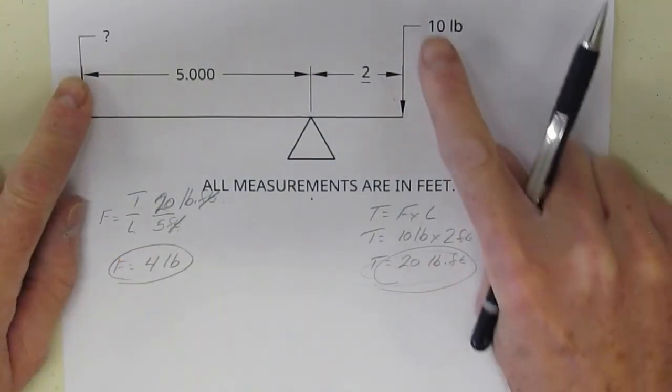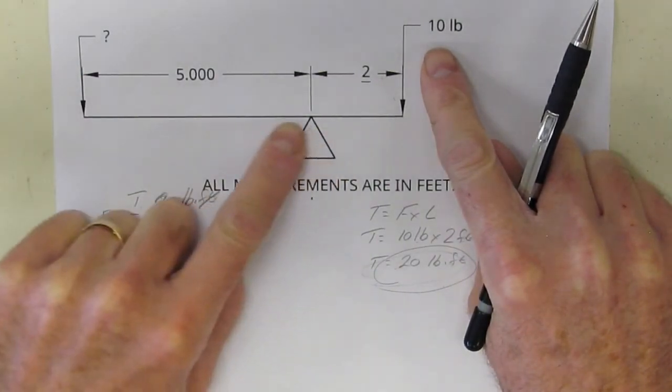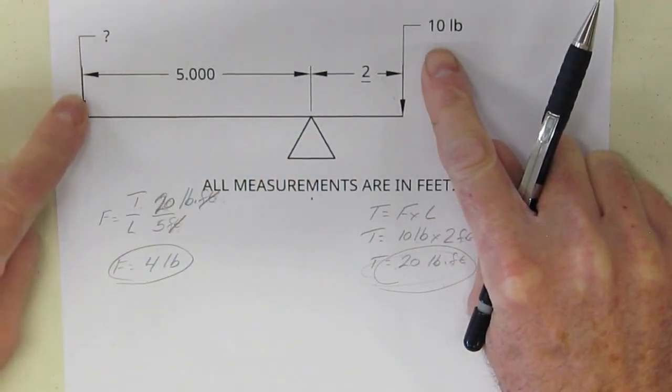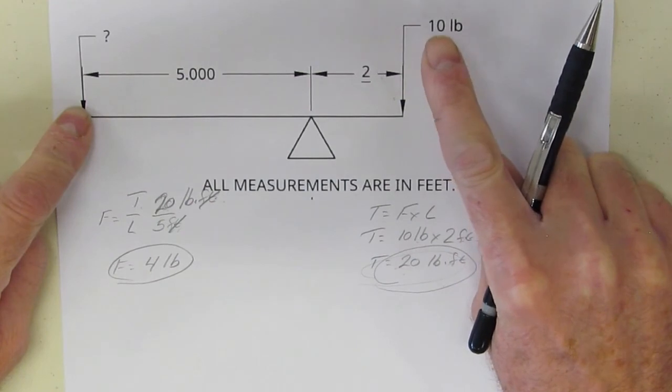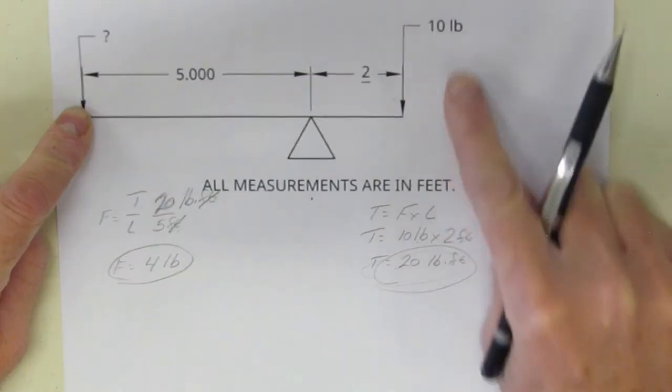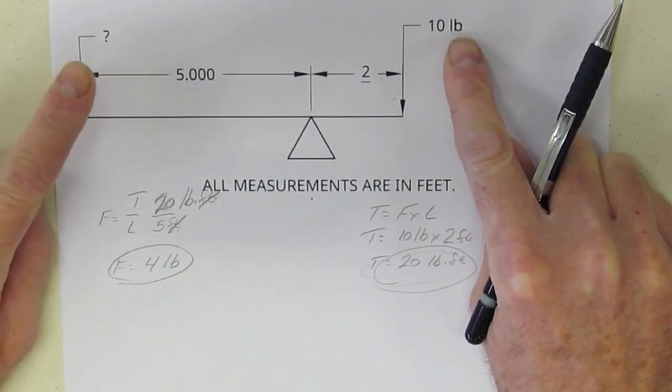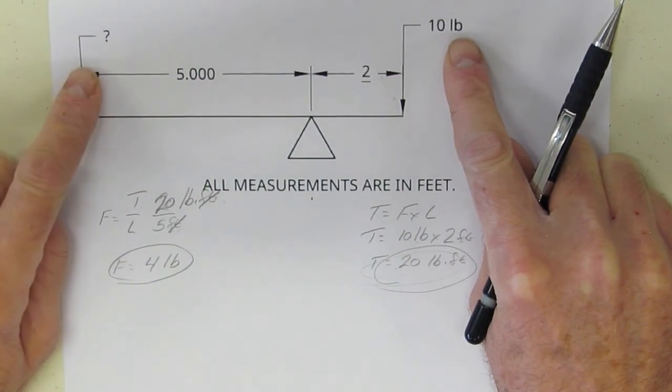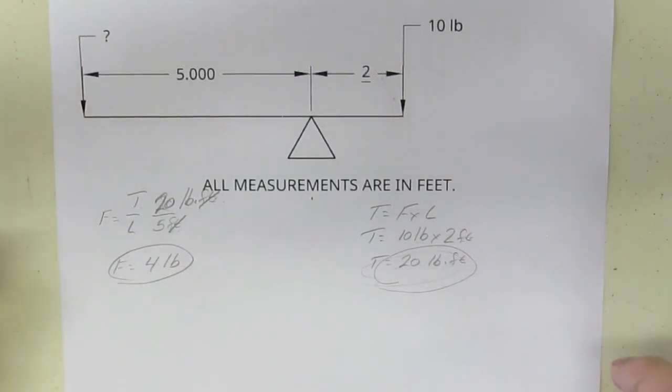Well, because this is a longer arm, it requires less force than this side. So it does—10 pounds and 4 pounds. Because this is longer, it would be less force. See how that makes sense? I hope this helps, and please contact me if you have any questions.